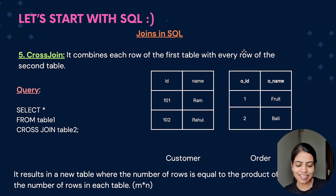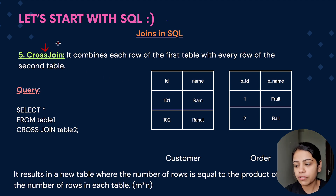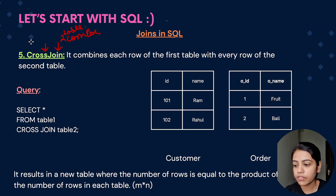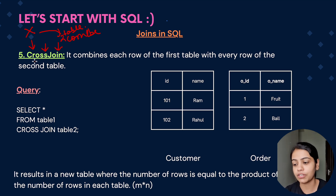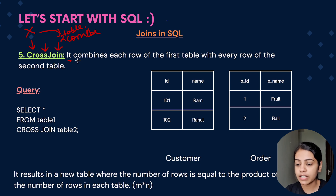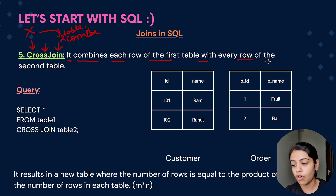Without any further delay, let's get started. As the name suggests, in a join we basically combine two tables. Cross join is essentially a cross product — whenever we are performing a cross product between two tables, that gives us a cross join. In cross join, it combines each row of the first table with every row of the second table.